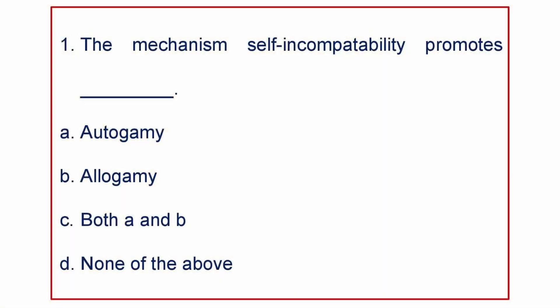First question. The mechanism self-incompatibility promotes: A. Autogamy, B. Allogamy, C. Both A and B, or D. None of the above. Self-incompatibility promotes Allogamy, i.e. cross-pollination.